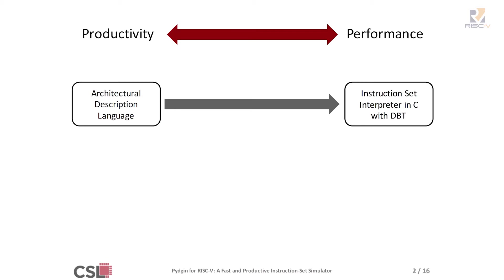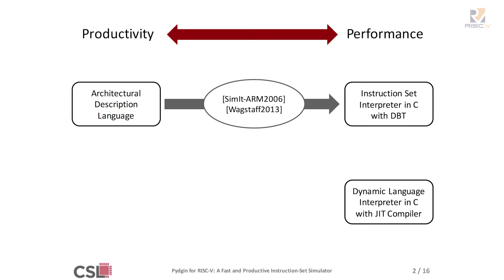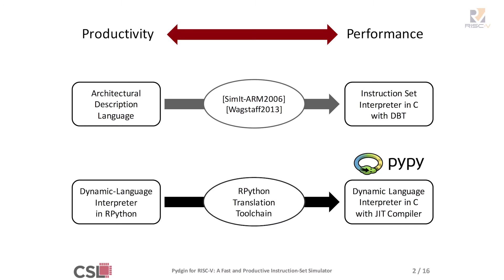There has been some work to automatically translate high-level descriptions into low-level C. However, these usually suffer because they're either proprietary tools or not very well maintained. There's a similar trend in the programming languages community: dynamic languages such as JavaScript and Python have just-in-time-enabled interpreters, also traditionally written in C. A notable exception is the PyPy project, which wrote their interpreter in Python itself.